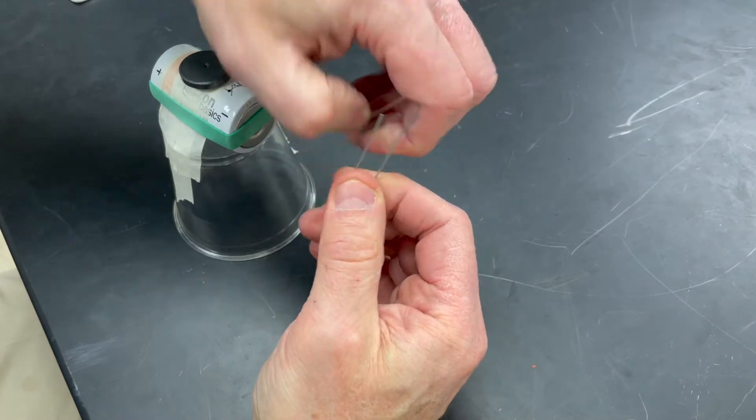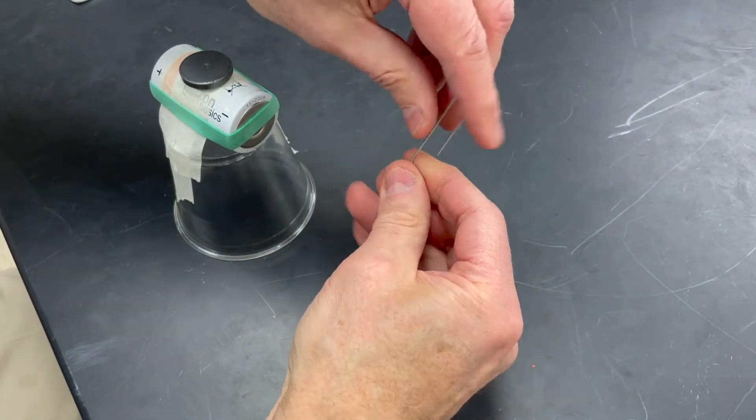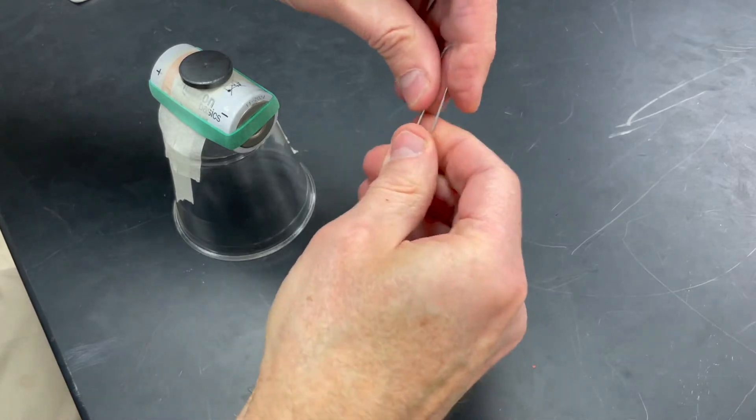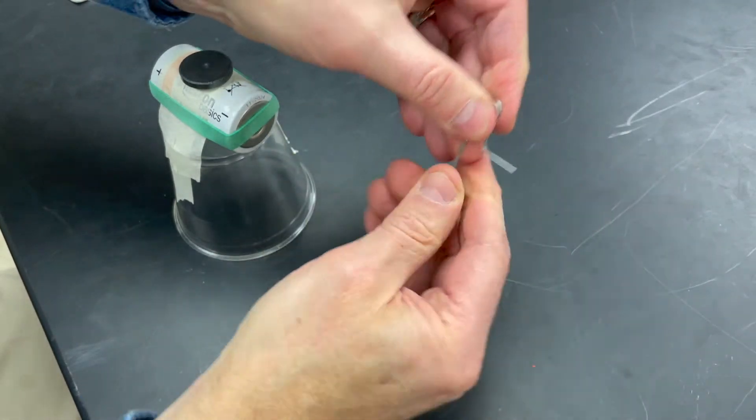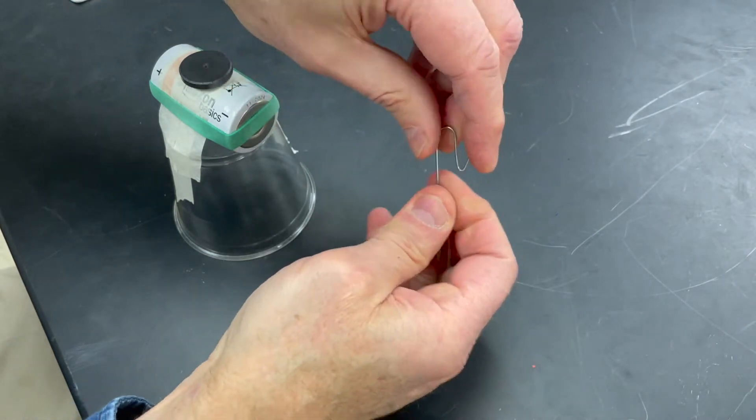You'll need two paper clips, and you're going to bend the paper clip as you see here. We're trying to make a little hook at one end. You might want to use a pair of pliers for this part. Be careful not to poke yourself.